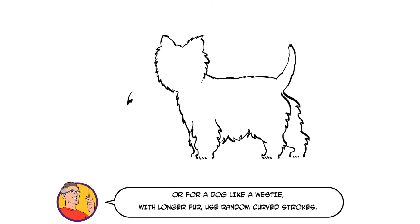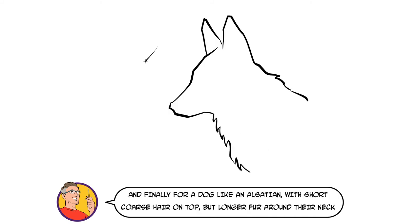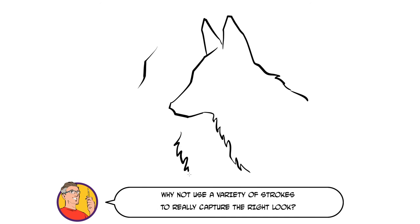Or for a dog like a Westie with longer fur use random curved strokes. And finally for a dog like an Alsatian with short, coarse hair on top but longer fur around their neck why not use a variety of strokes to really capture the right look.